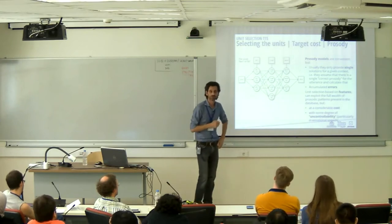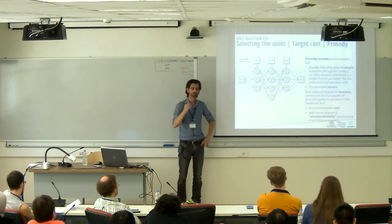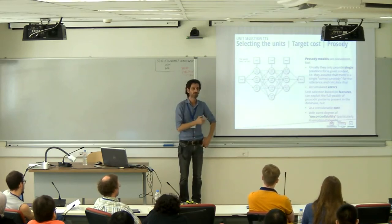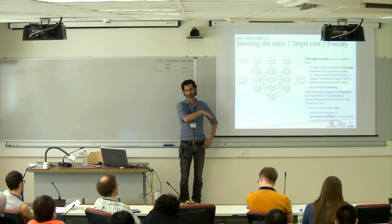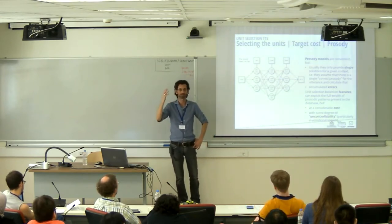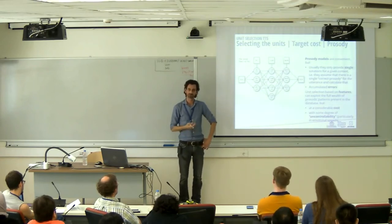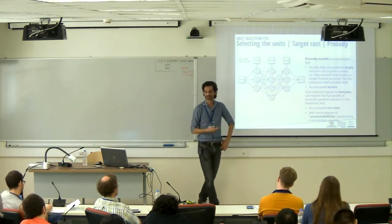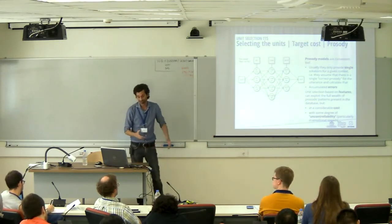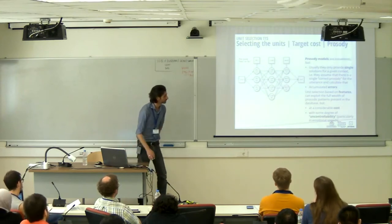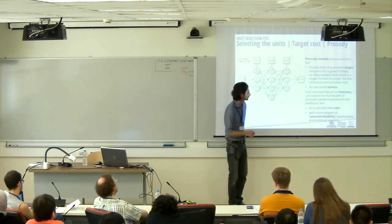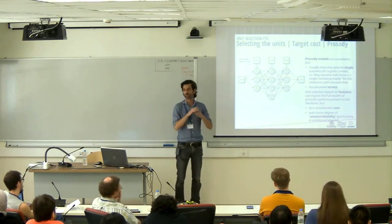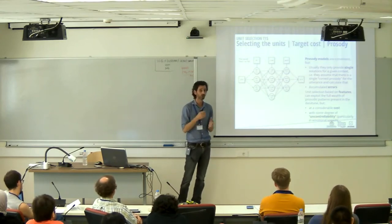Another problem with models is that they accumulate errors. For example, if you train a model passing through ToBI symbols, you have a model taking you from context to ToBI, and then another model from ToBI to target values — and accumulating errors can lead to too much total error. Carrying the entire database with you, as unit selection requires, has a considerable cost, but in expressive voices it also introduces uncontrollability.